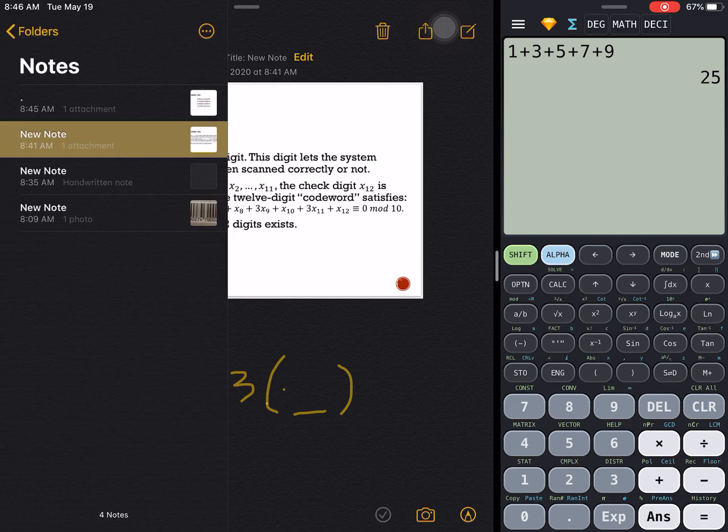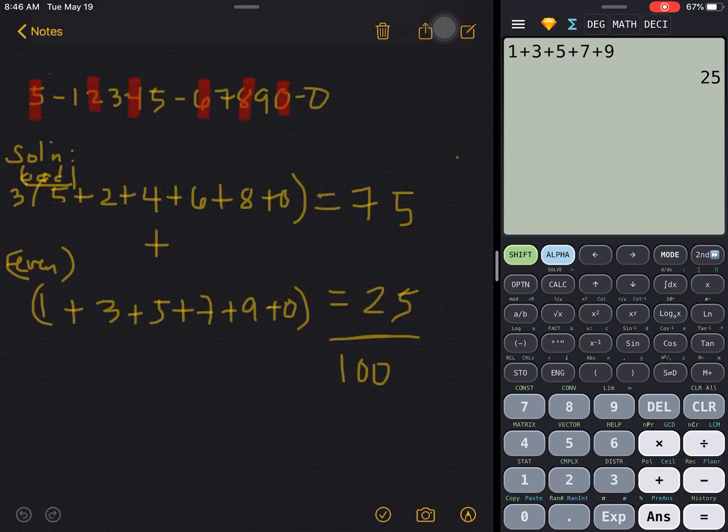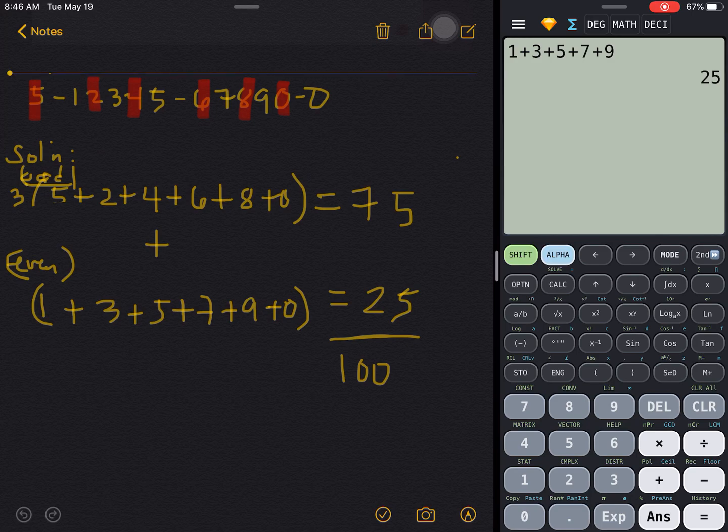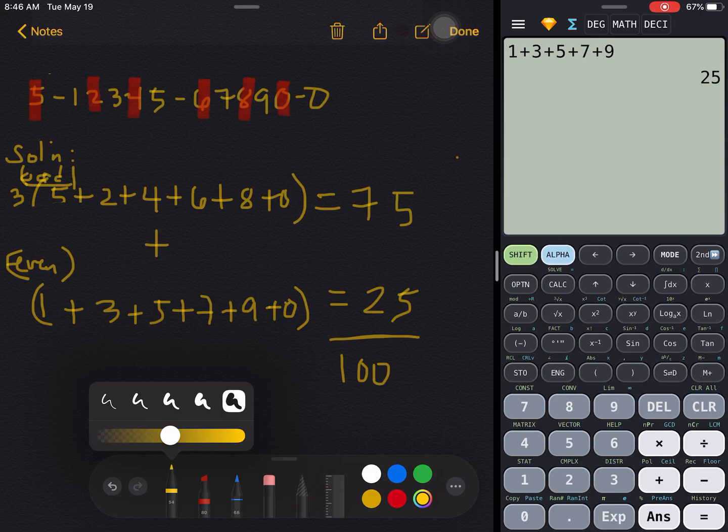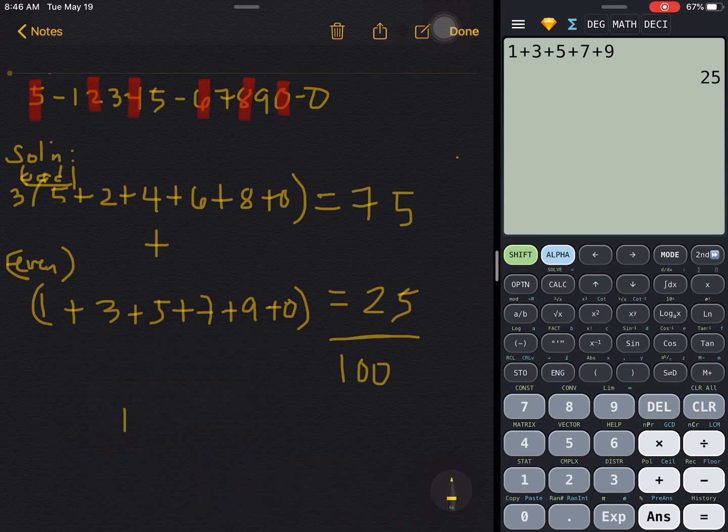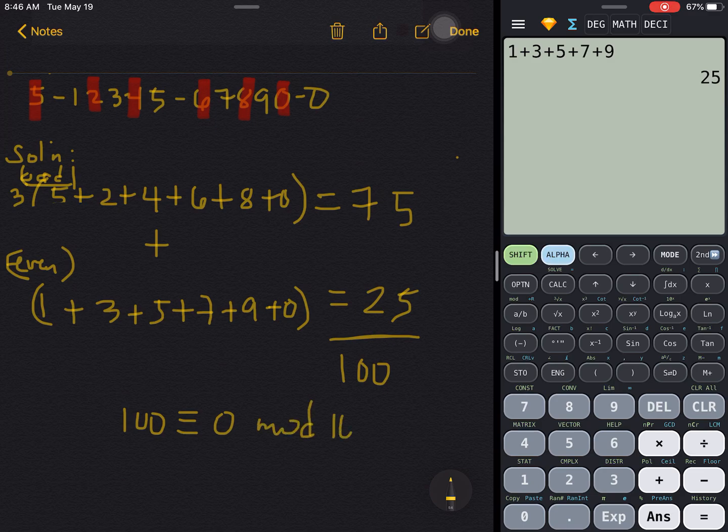And again, just like we're basing from our algorithm, it says that the sum should be divisible by 10. Clearly, 100 here is divisible by 10, so we may now write here 100 is congruent to zero modulo 10 because yes, 100 is divisible by 10.